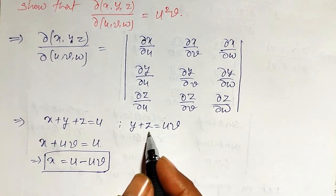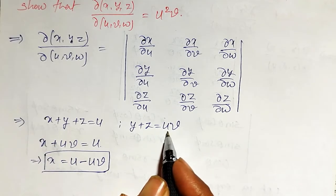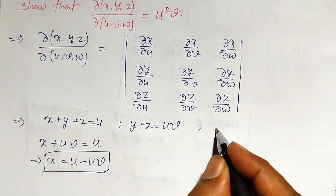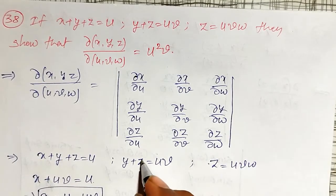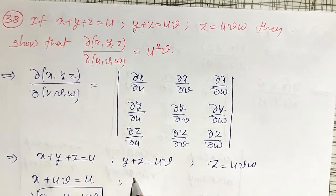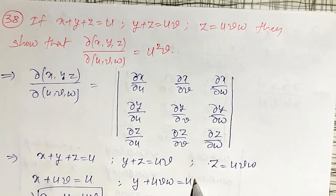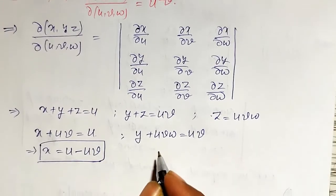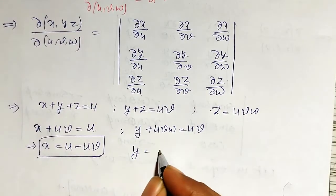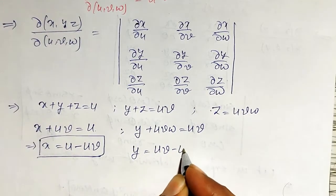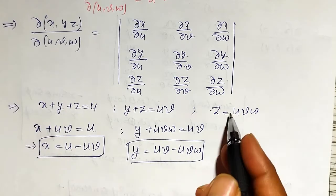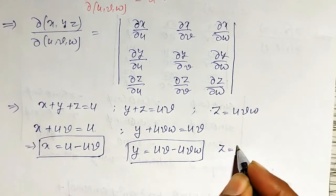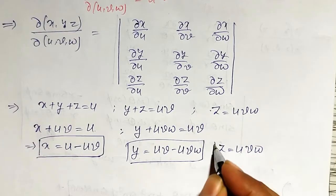Similarly, I want y in terms of u, v, w. z is given as z = uvw. Therefore, I can replace z: y + uvw = uv. Therefore, y = uv − uvw. And z is already in terms of u, v, w: z = uvw.